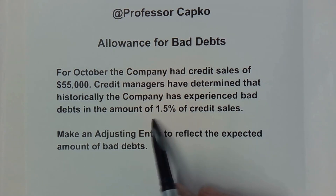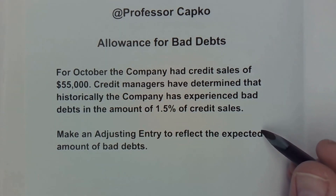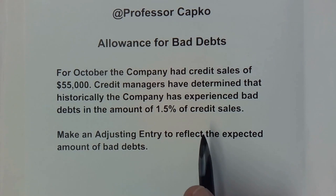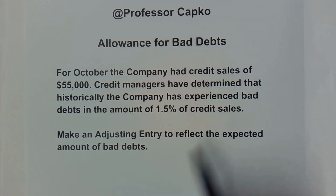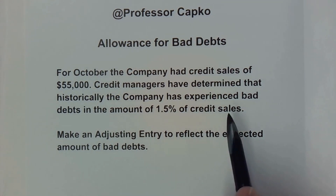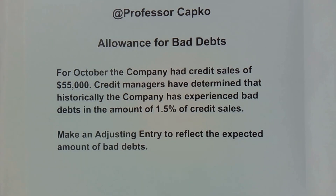We still do have the 1.5 percent that don't pay. One way to handle it is to wait and see who doesn't pay and then write off those accounts, but the problem is that doesn't match the revenue to the expense. It may be several months before you realize someone's not going to pay. In accounting, we want to match our expenses to the revenue that drives them — we're making money on the transaction but know a certain amount will be lost.